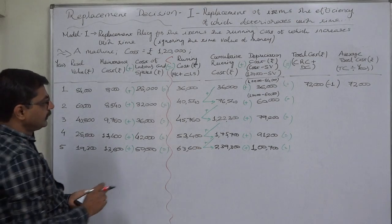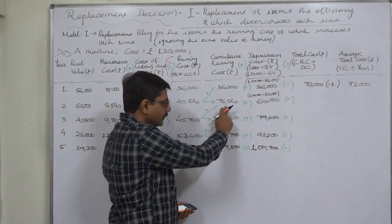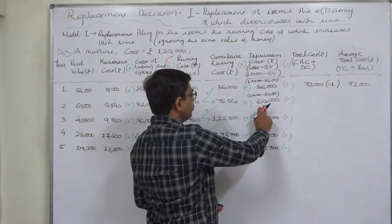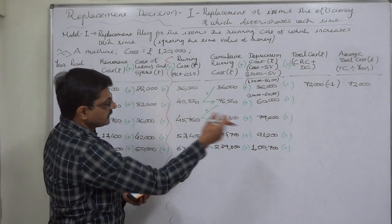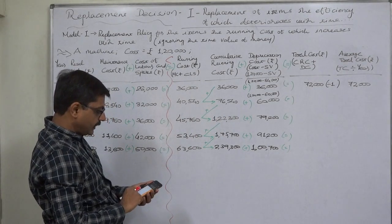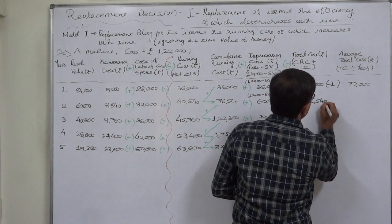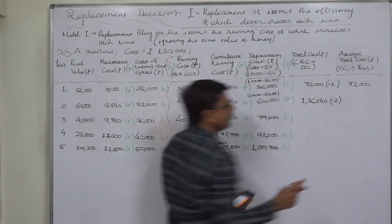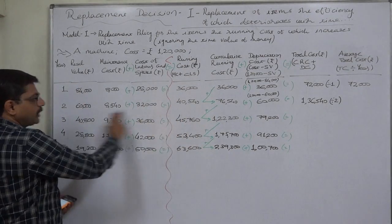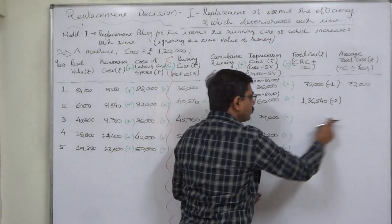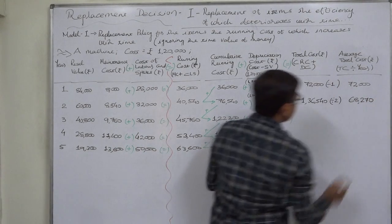If we use the machine for two years, the total running cost for two years is seventy-six thousand five hundred and forty, and the depreciation cost is sixty thousand. Adding these gives one lakh thirty-six thousand five hundred and forty. Since this is the total cost over two years, we divide by two years, giving an average total cost per year of sixty-eight thousand two hundred and seventy.